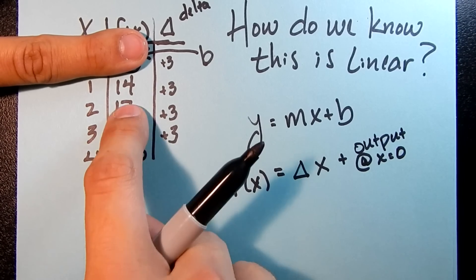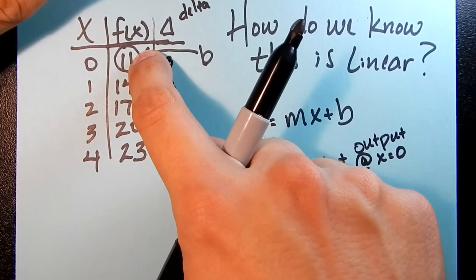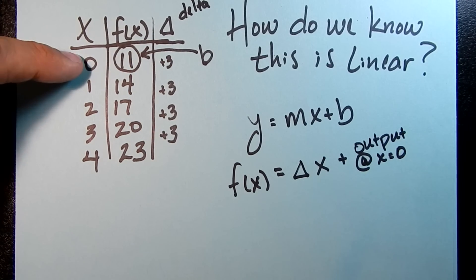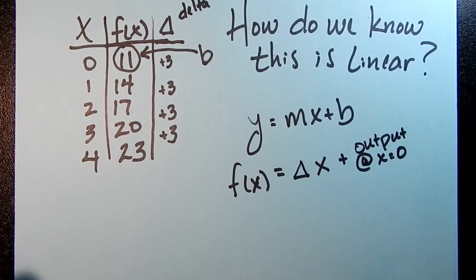what would be up here would be 11. So we have to do the output at 0. We can't just do where the table starts.